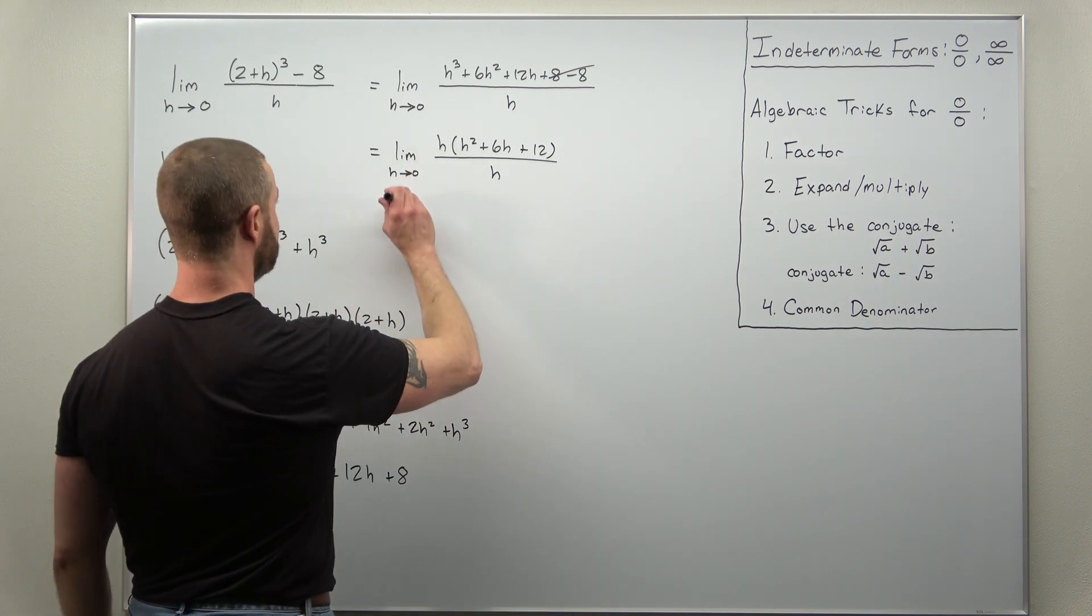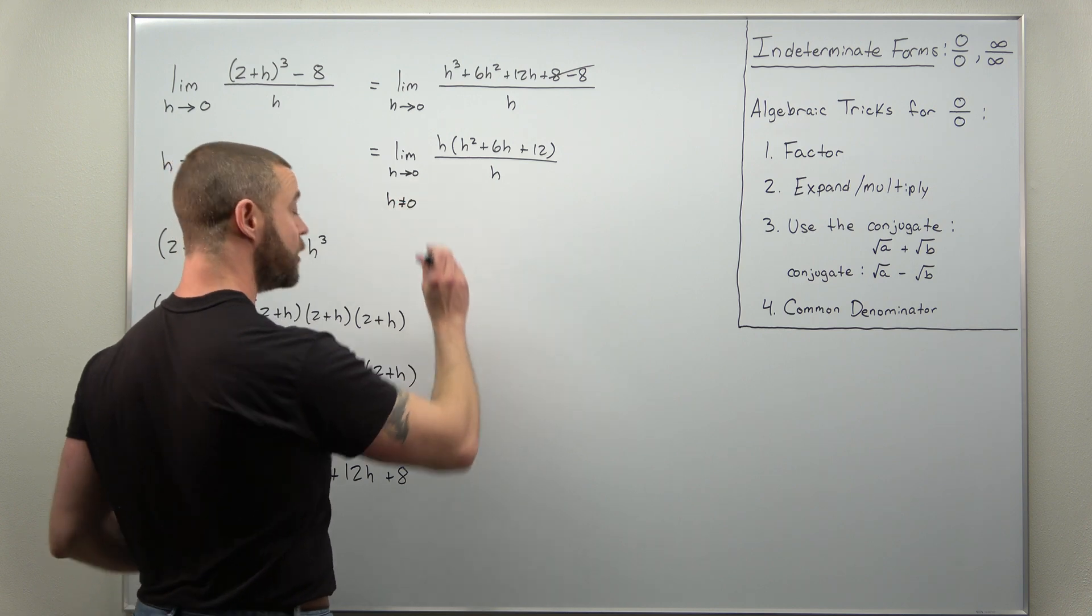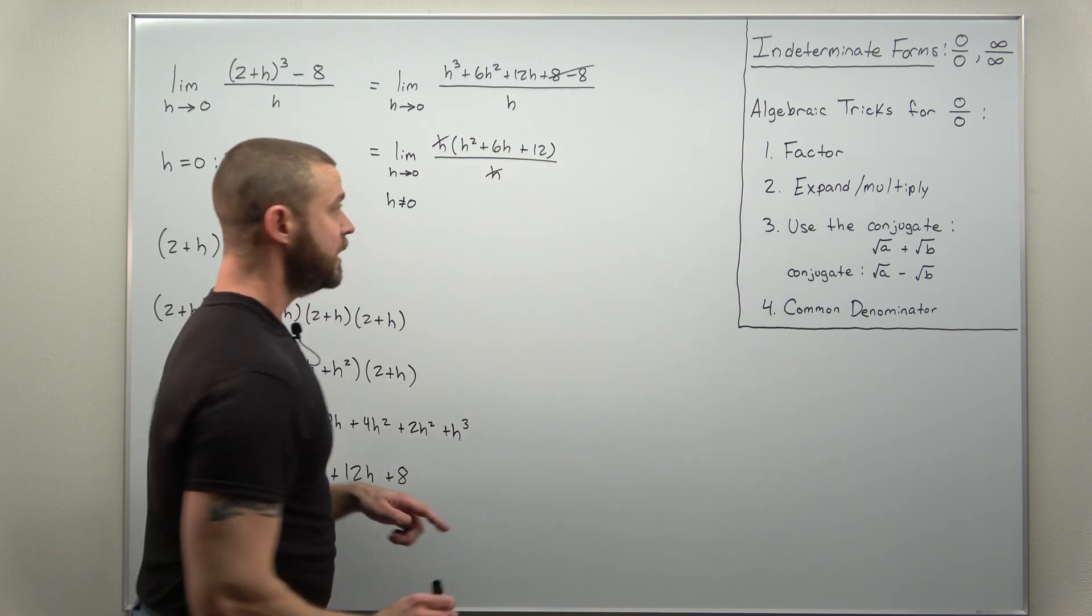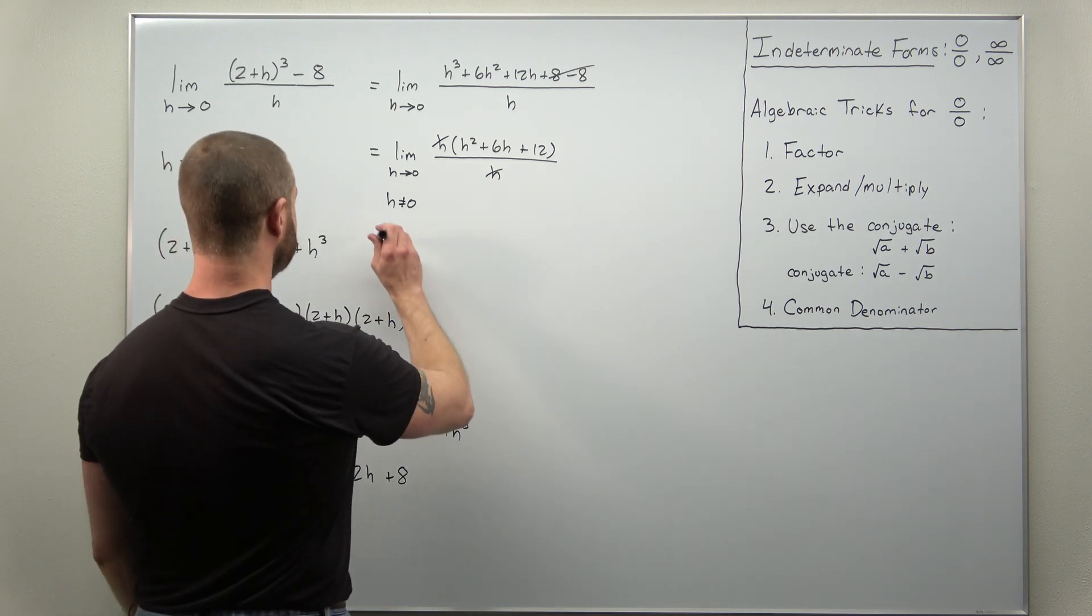h is approaching zero, so h over h here, as we let h approach zero, h never equals zero, so you can cancel those out, and we have a very simple limit.